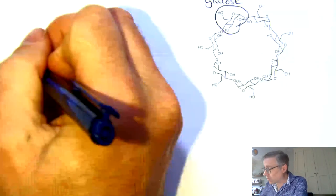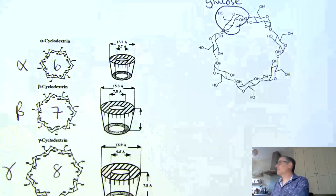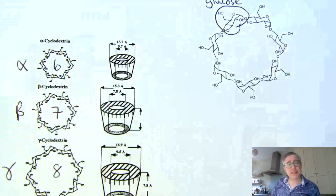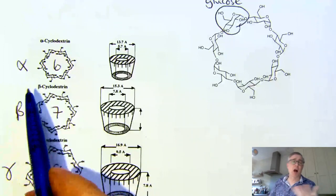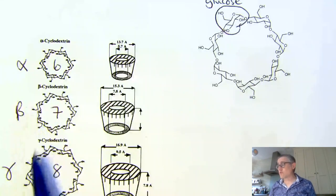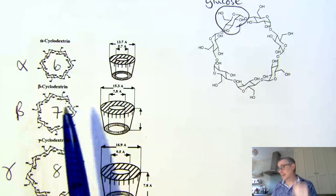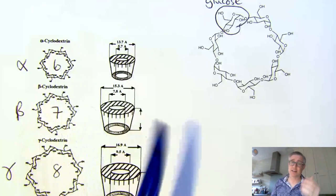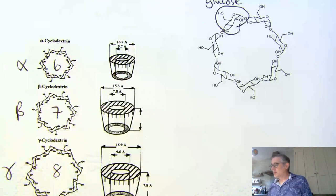We call those alpha, beta, or gamma. The alpha, beta, gamma doesn't refer to the stereochemistry of the sugars — it's just an arbitrary nomenclature used for the size of the ring. They might as well have called them six cyclodextrin, seven cyclodextrin, eight cyclodextrin. Why they didn't, I don't know — decisions lost in the mysteries of time.